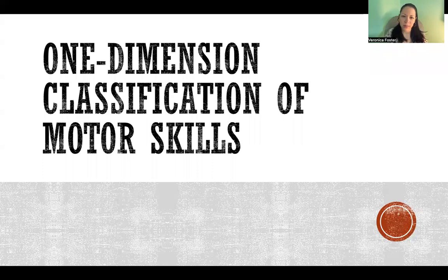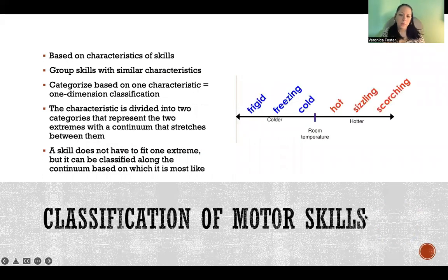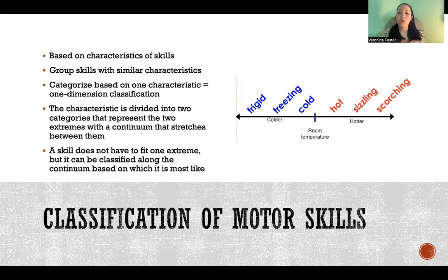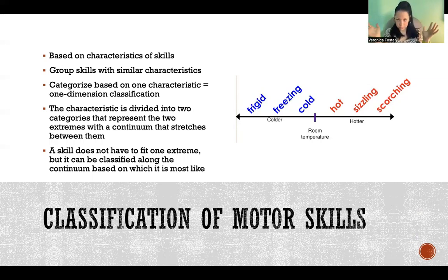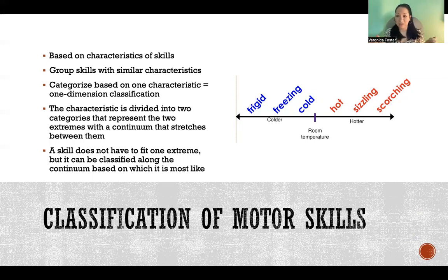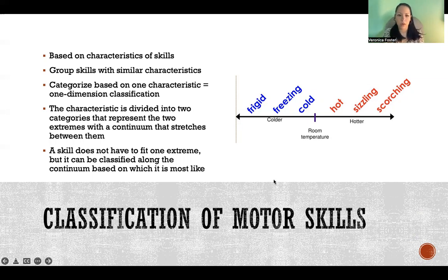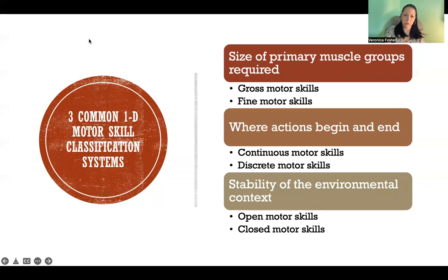In this video, I'm going to talk about one-dimension classification systems for motor skills. Motor skills can be classified based on the characteristics of the skills. One-dimension classification systems look at two extremes that are related to each other — like frigid and scorching, which are two extremes related to temperature. Motor skills can be classified along a continuum with two characteristics at the extremes of either end. There are three particular classification systems that we commonly use.